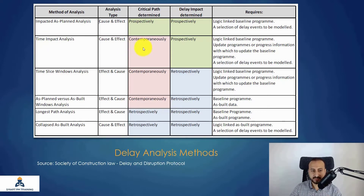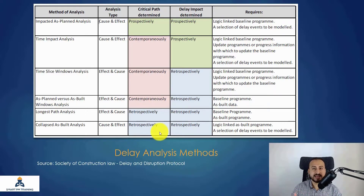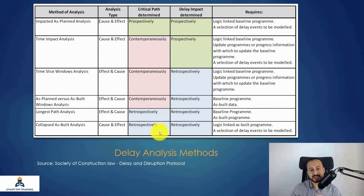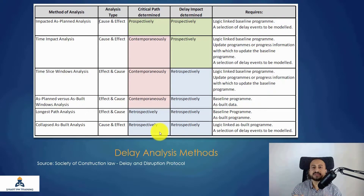Collapse As-Built is retrospective — the opposite of prospective. At some point in time, a schedule update shows three months of delay in the project, and because we are dealing with actual data, actual dates, and actual percentages, it is hard to clearly tell how those three months of delay occurred. For retrospective analysis, you do not forecast event impact; rather, you investigate the as-built information — original versus actual durations, actual versus planned dates, logic maintained, and schedule logic changes.